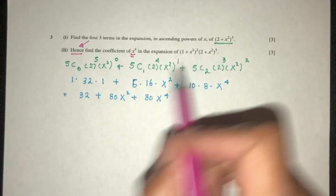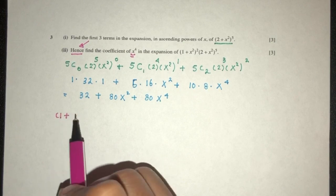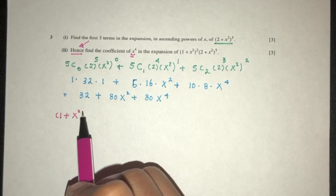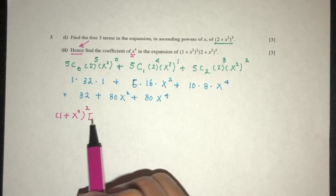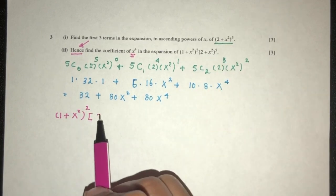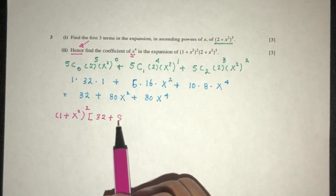So one by one. At first we have 1 plus x square, square times this expansion, which is this. That is from part 1.